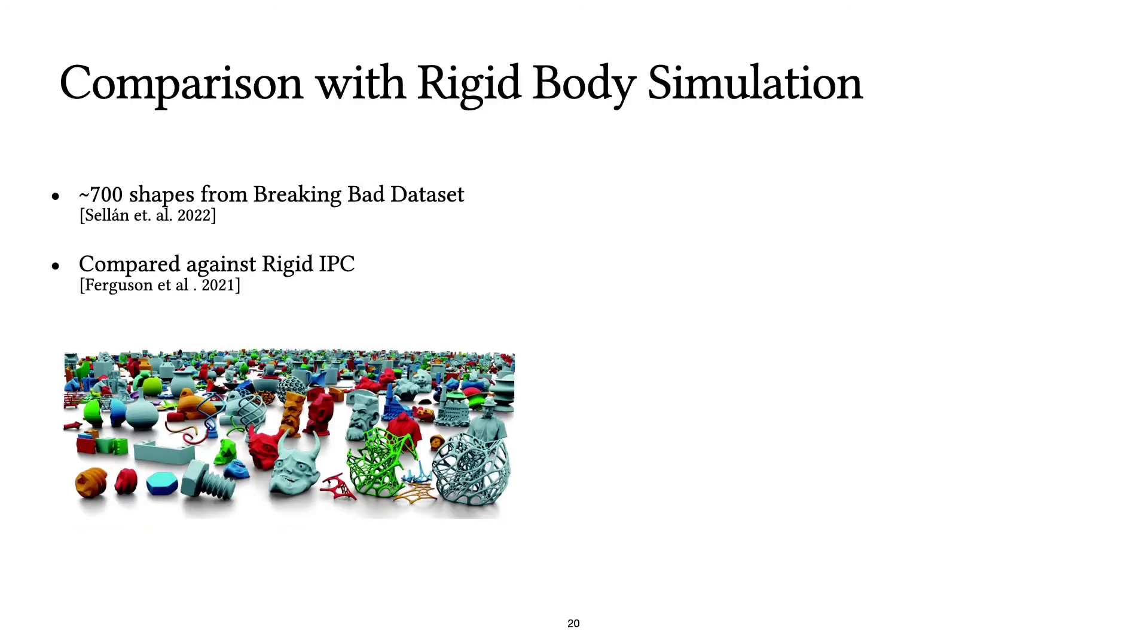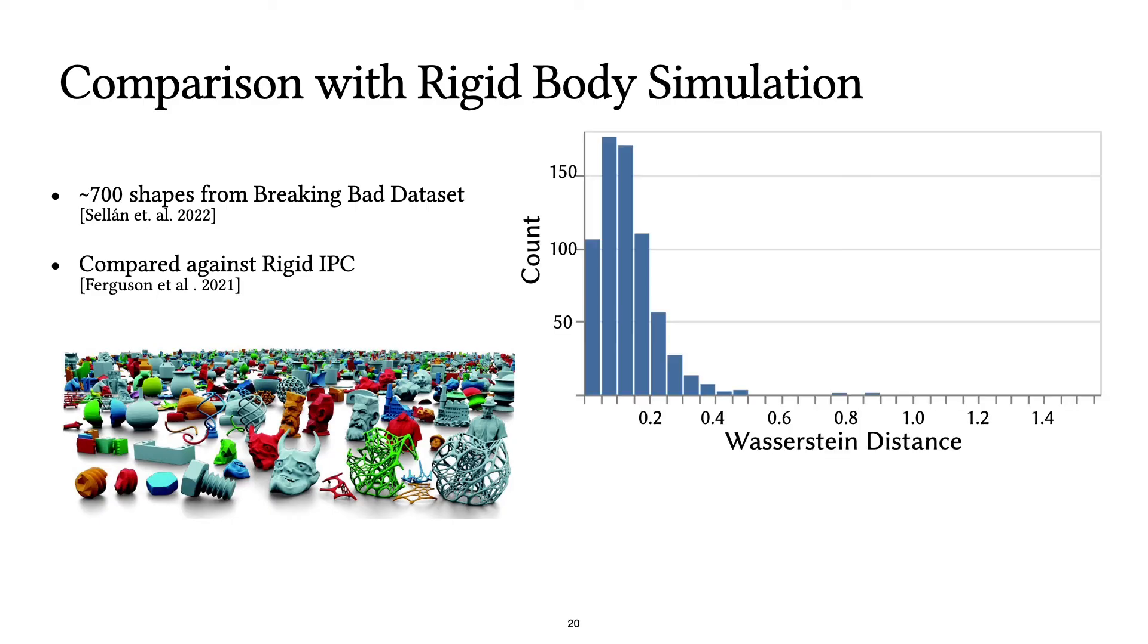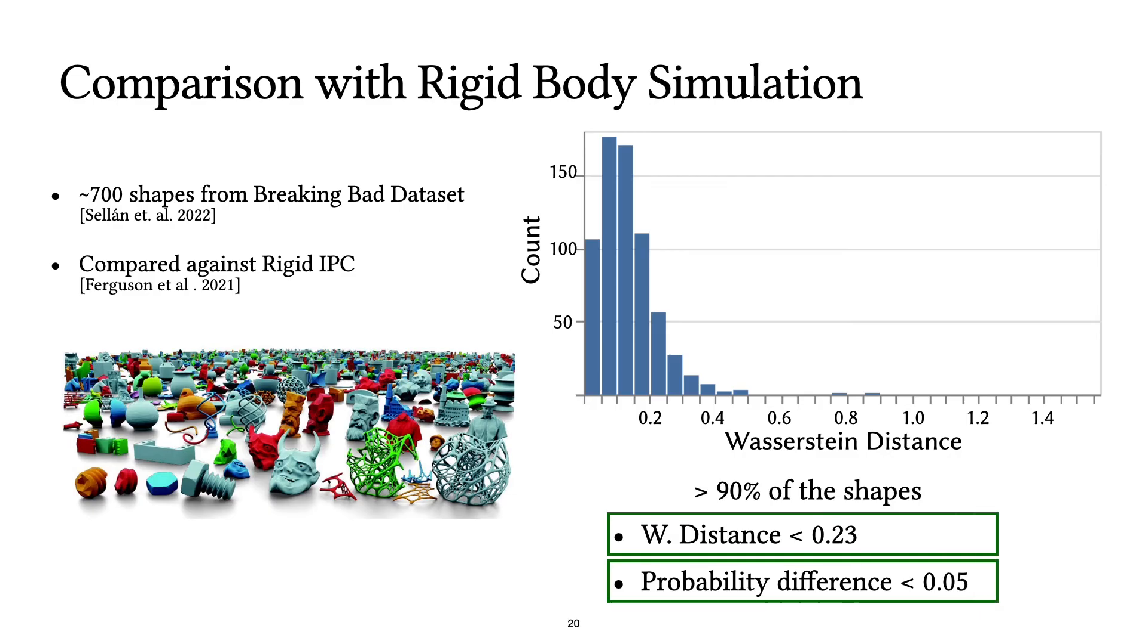We also compare our method with rigid body simulation. We take 700 shapes from the Breaking Bad dataset and drop them on the ground thousands of times using rigid IPC. And as we can see, our method is a pretty close match to these simulation results. For more than 90% of these shapes, our probabilities differ by only 5%.